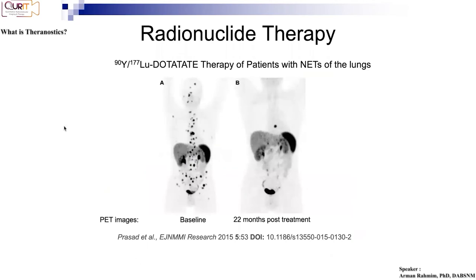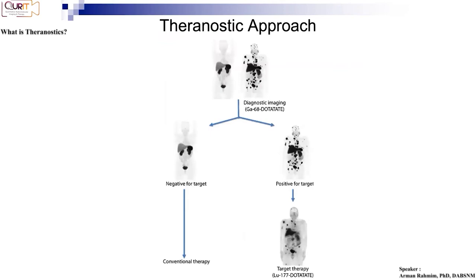Here's an example of a patient with extensive neuroendocrine tumor disease before therapy — look what happens after therapy. You could not have done external beam radiation therapy on this patient because the disease is all over the place. Some of these patients are hopeless with conventional treatment, but with radionuclide and radiopharmaceutical therapy, these patients are being cured or at least having their survival significantly improved.